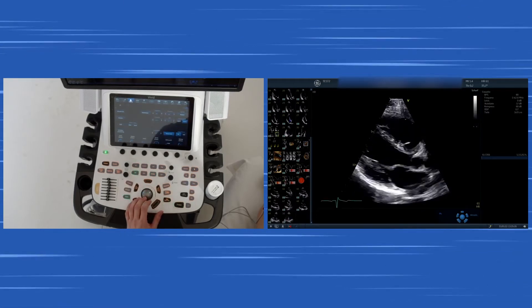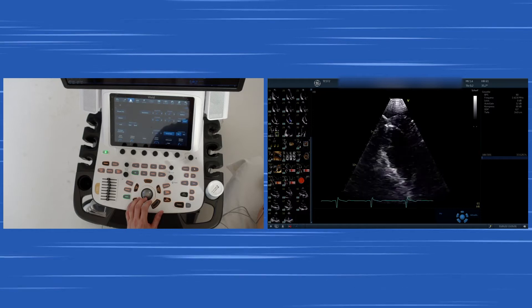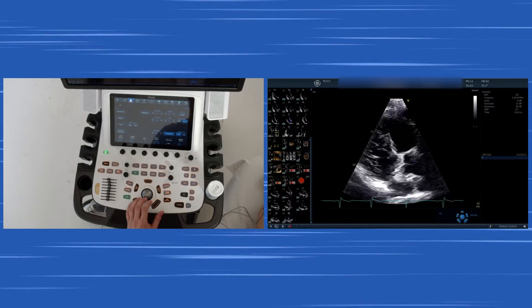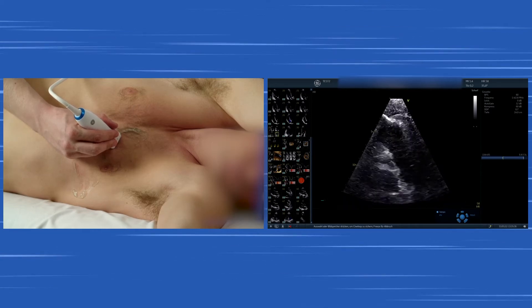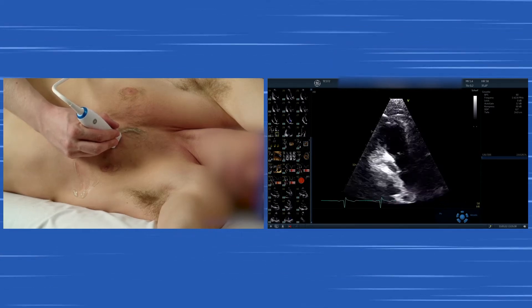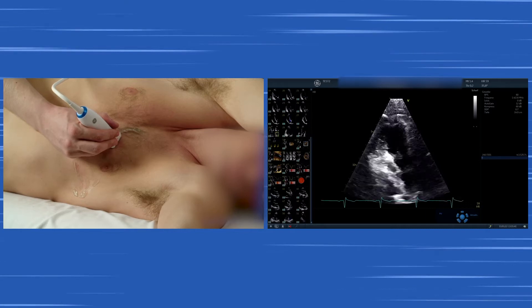Tilting the transducer upwards will result in a view of the pulmonary artery and the pulmonic trunk and the RVOT and the pulmonic valve in the center of the image. Now you can visualize it quite nicely over here.